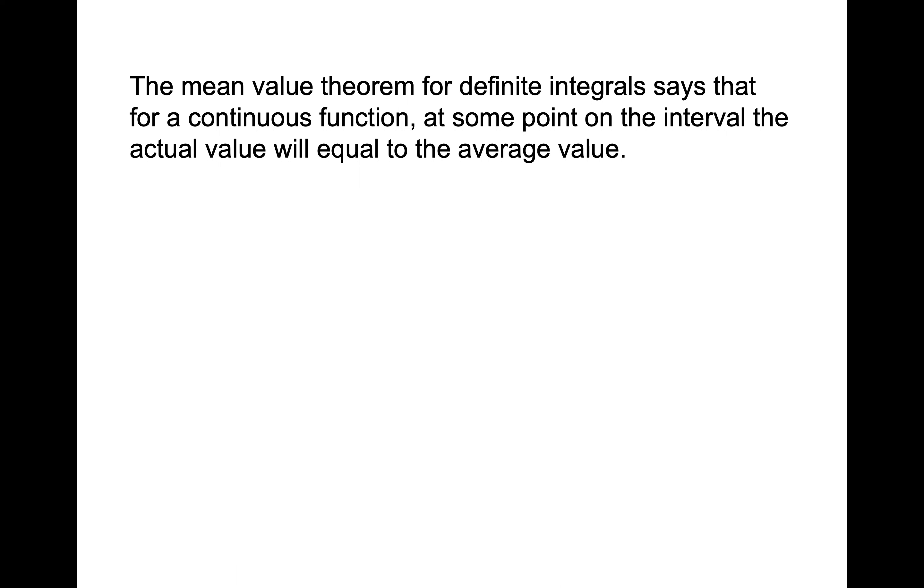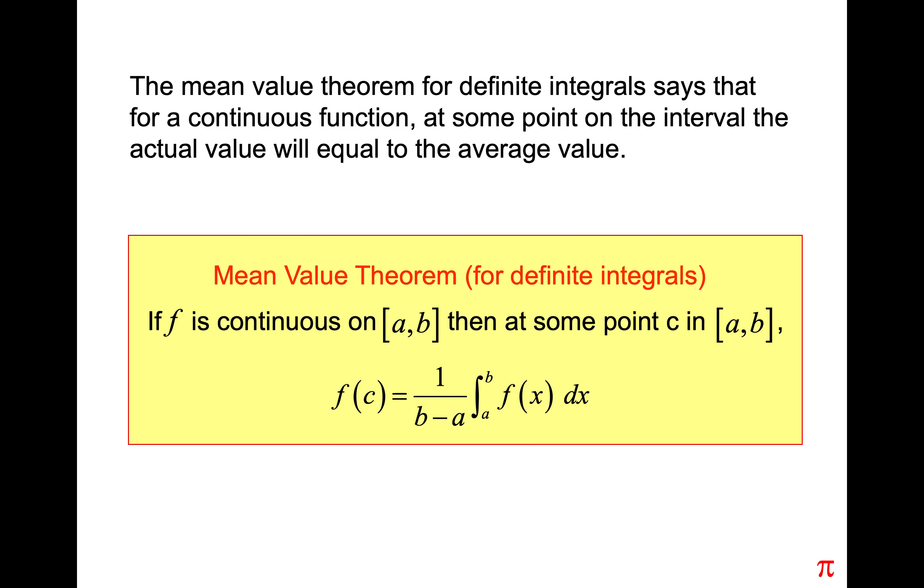So we saw this. We had a mean value theorem for derivatives as well that said for a continuous function on a closed interval, there had to be some point where the average rate of change was equal to the instantaneous rate of change.